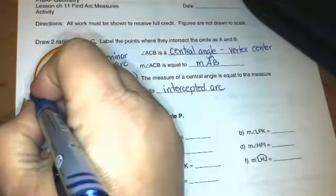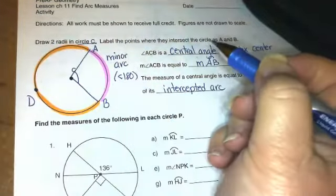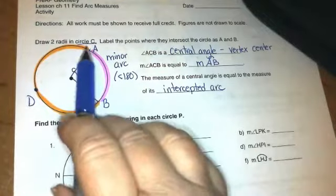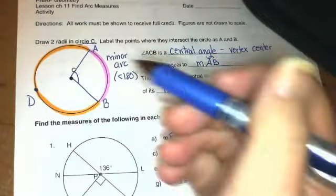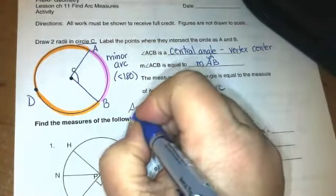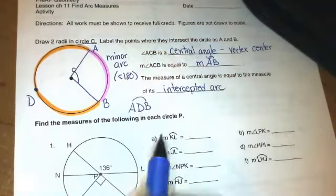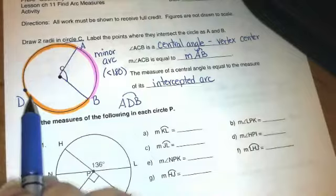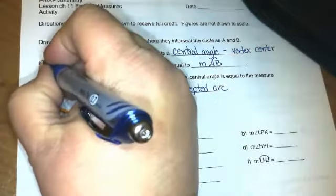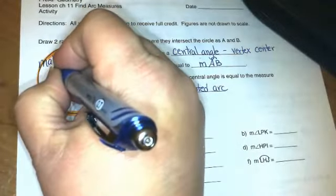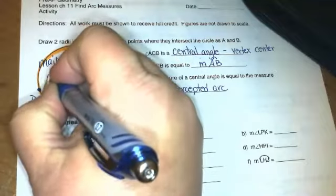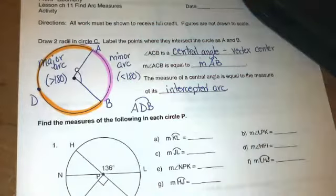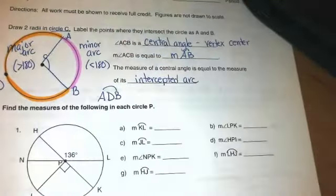On the other side of it, we have what's called a major arc. Now to name a major arc, I've got to put an extra letter in here because if I just call it arc AB, you don't know if I'm going the long way or the short way. But if I call it arc ADB, you know exactly which way I want you to go. I want you to go from A to D then to B. So that's a major arc because its measure is greater than 180 degrees.